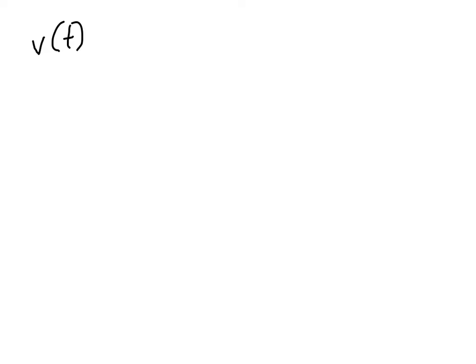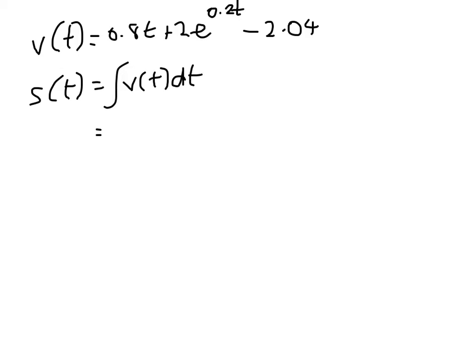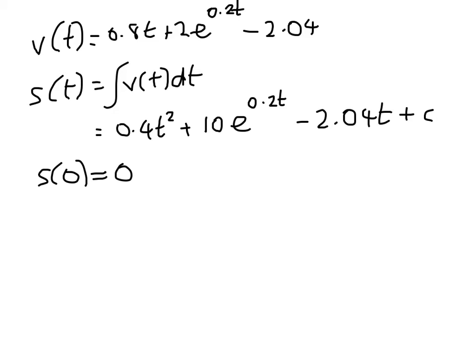So we get v of t is equal to 0.8 t plus 2 e to the 0.2 t minus 2.04. So now we can get s of t, which is this. And so that will be 0.4 t squared plus, again, I'll have my e to the 0.2 t. 0.2, so this is going to be 10 now. 10 e to the 0.2 t minus 2.04 t plus c. We know, though, that at 0, the object had not moved. So s of 0 equals 0. So be careful here. What does that give us? 0 is equal to 0 plus 10 minus 0 plus c. So c is equal to negative 10.